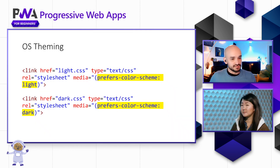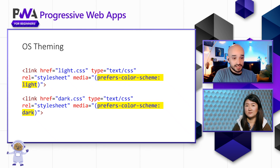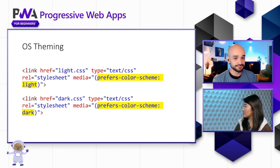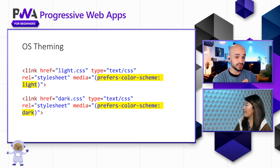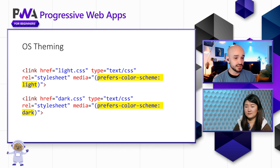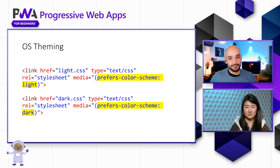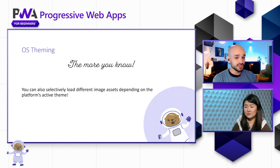The way you would accomplish this is by defining different styles in CSS. You can have CSS custom properties defined for a light version of a stylesheet and specify a media query. When the media query reads `prefers-color-scheme: light`, it would load the light.css file, and it's analogous for dark mode — if `prefers-color-scheme` is dark, you load styles selectively for a dark-themed PWA. Something really cool is that you can also selectively load different image assets depending on the platform's active theme.